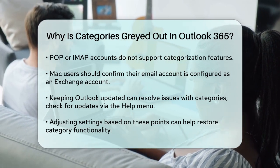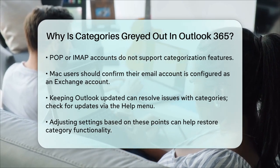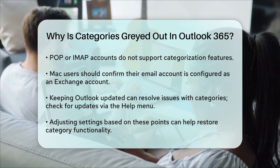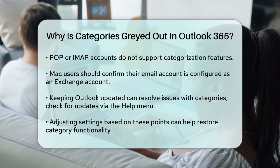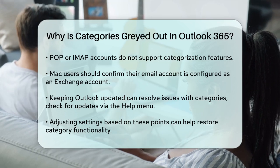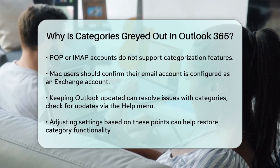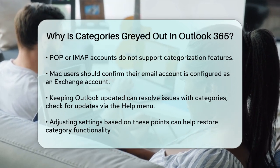By checking these potential causes and adjusting your settings accordingly, you should be able to get your categories working again in Outlook 365.